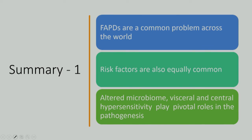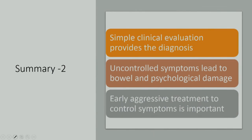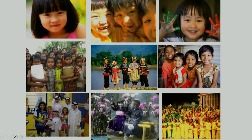In summary: functional abdominal pain disorders are a common problem worldwide, with equally common risk factors — there is no escaping from them whether you are an adult or pediatric gastroenterologist. Altered microbiome, visceral hypersensitivity, and central hypersensitivity play a pivotal role in pathogenesis. Simple clinical evaluation provides the diagnosis most of the time. Uncontrolled symptoms lead to bowel and psychological damage, and early aggressive treatment to control symptoms is very important. Thank you very much for your patient listening.